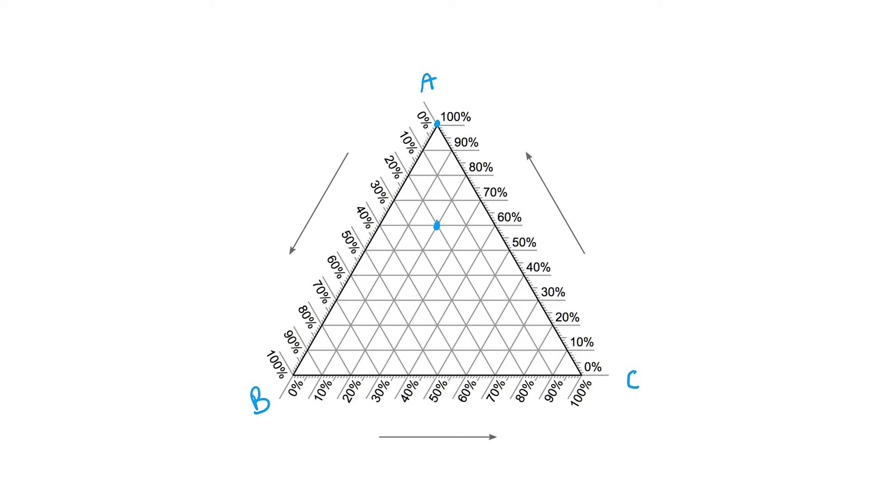If we want to know what percentage composition this point is, we have to first work out which axis refers to which component. To do this, say if we're looking at A, look to the opposite side, which is this line here.